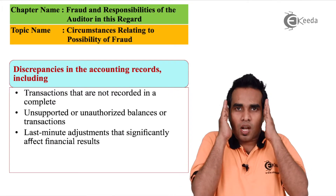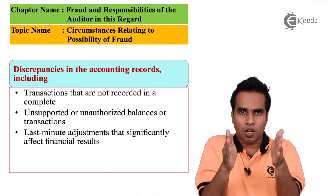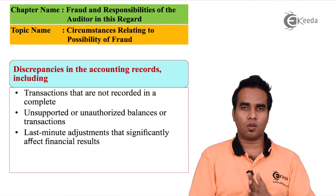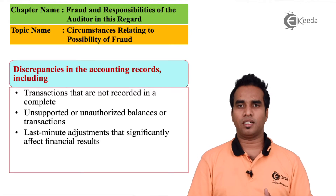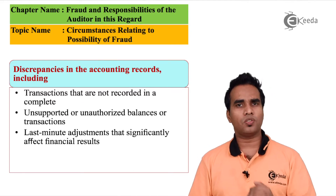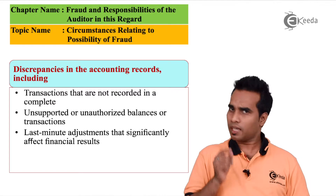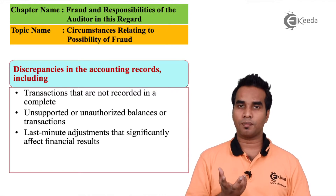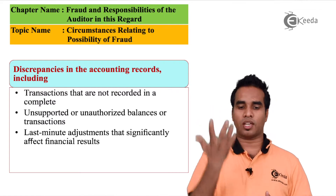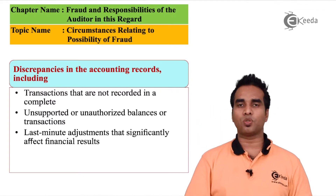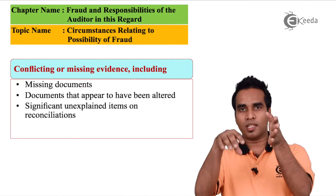Discrepancies in accounting records. First, transactions not recorded completely — if any transactions are completely not recorded, that indicates problems or discrepancies. Second, unauthorized or unsupported transactions, including last-minute judgment entries — all these are discrepancies.